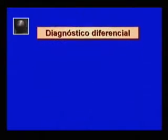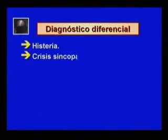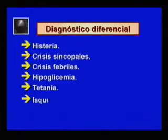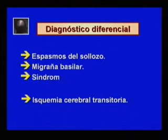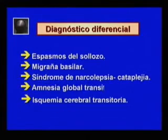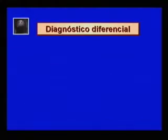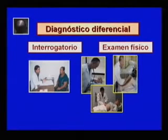El diagnóstico diferencial se hará con afecciones que en ocasiones simulan una crisis epiléptica, entre las que se encuentran la histeria, las crisis sincopales, las crisis febriles, la hipoglicemia, la tetania, la isquemia cerebral transitoria, los espasmos de sollozo, la migraña basilar, el síndrome de narcolepsia-cataplejia y la amnesia global transitoria. Las características diferenciales de estas entidades con la epilepsia se precisarán teniendo en cuenta un interrogatorio cuidadoso, un examen físico exhaustivo y las pruebas complementarias adecuadas.